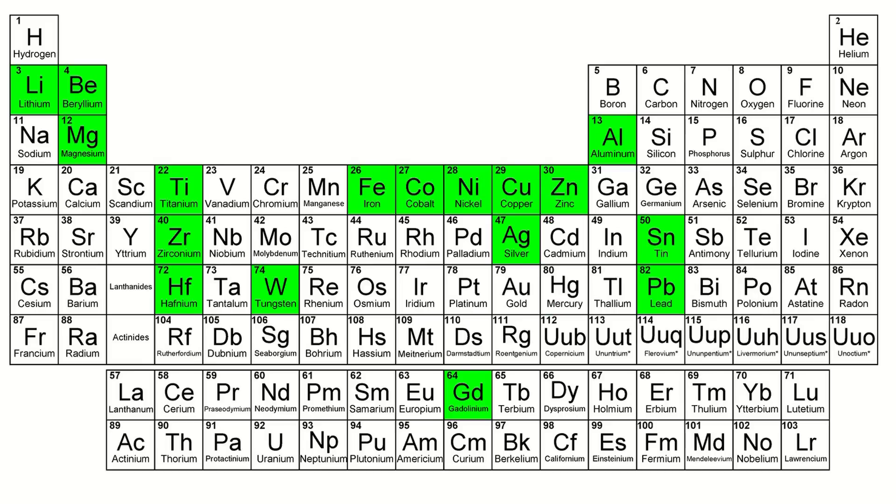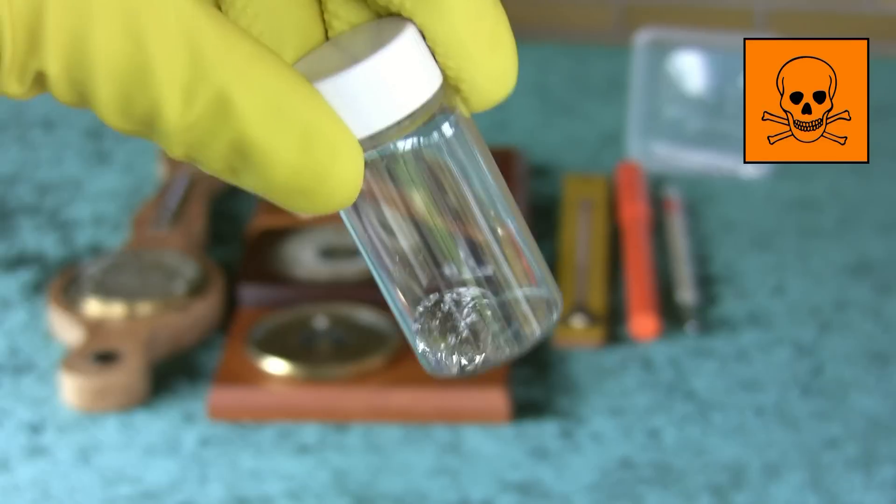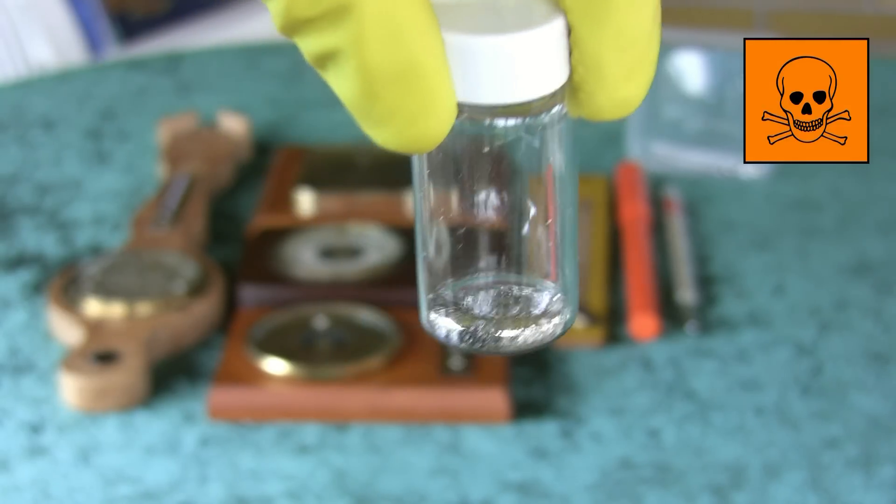How about some toxic ones? This is mercury with some little glass fragments floating around on it. I haven't figured out how to filter it yet.